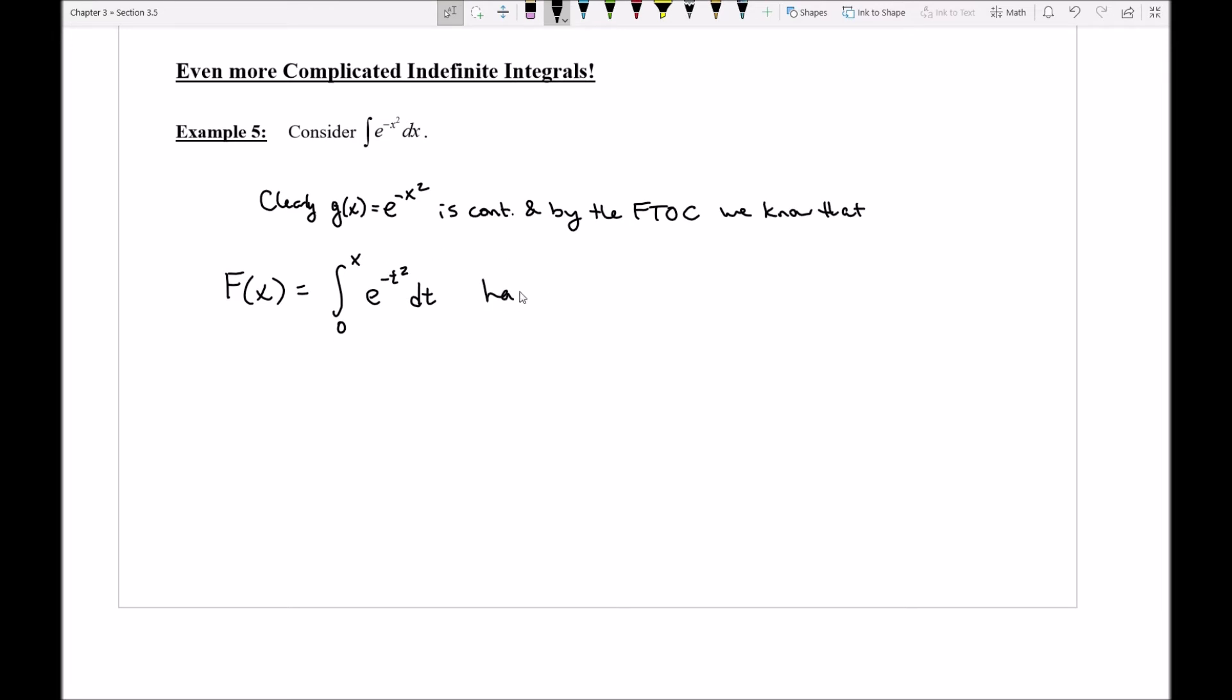So we know that this function F of x has the property that the derivative of that is just going to be e to the negative x squared times 1, because that would be the chain rule for that bound, or in essence this is really just g of x. So there is a function whose derivative does turn into g of x. It's this function. It's this guy right here. But notice that's not a nice function.